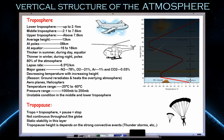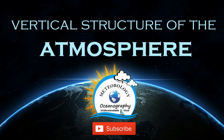Convection is the transfer of heat from one place to another by the movement of molecules in a fluid. This is all about the troposphere in the vertical structure of the atmosphere. See you in the second video on the vertical structure of the atmosphere. I hope you enjoyed this class — if it was useful, please share this information with your friends. Thank you.